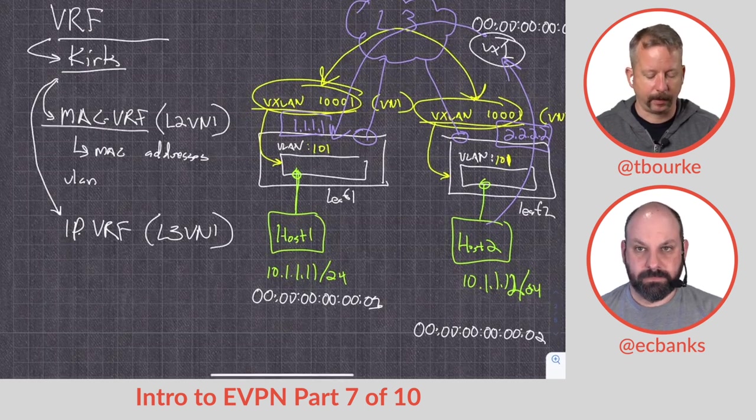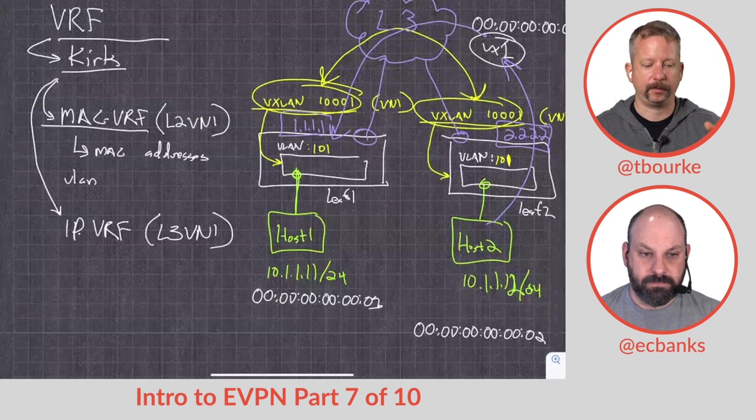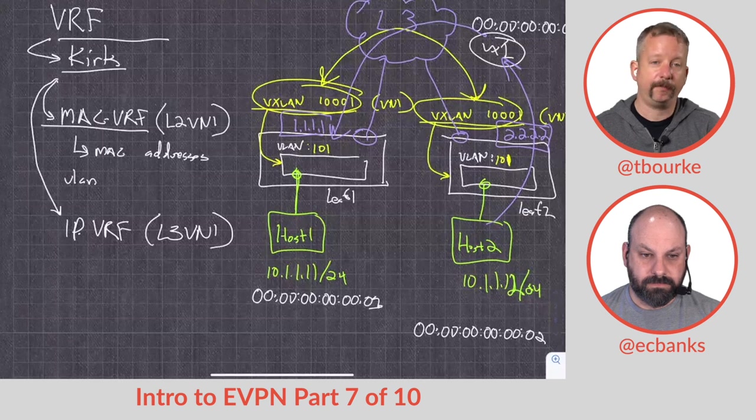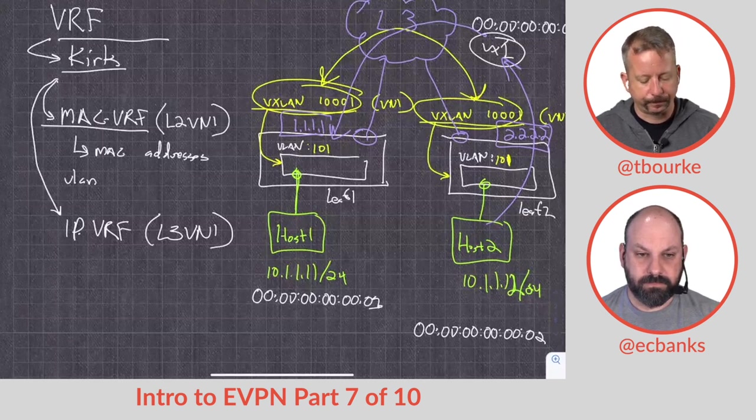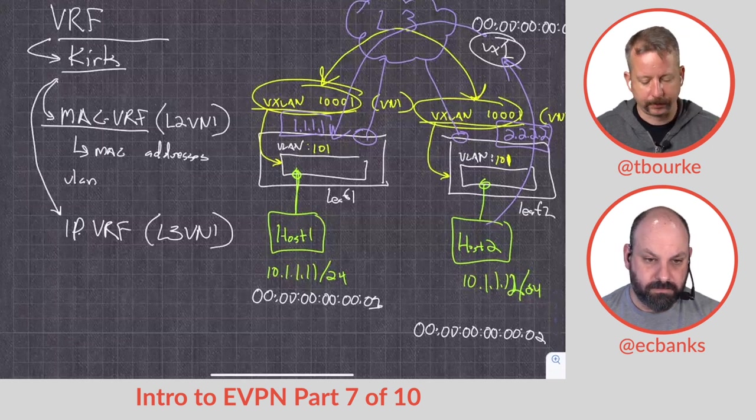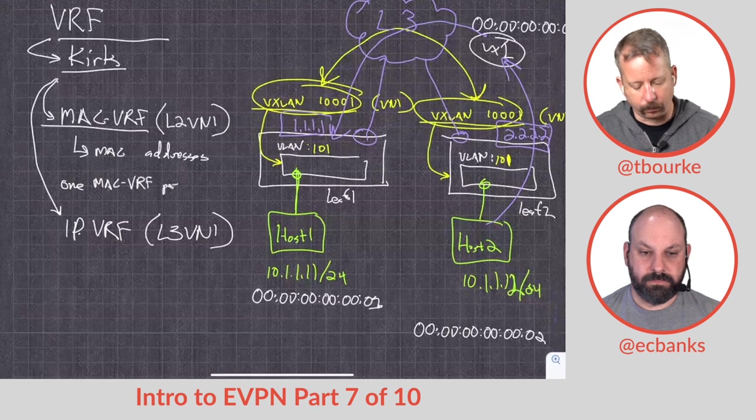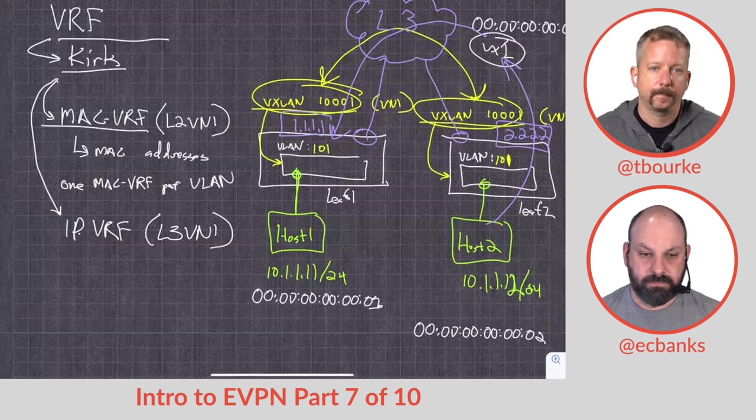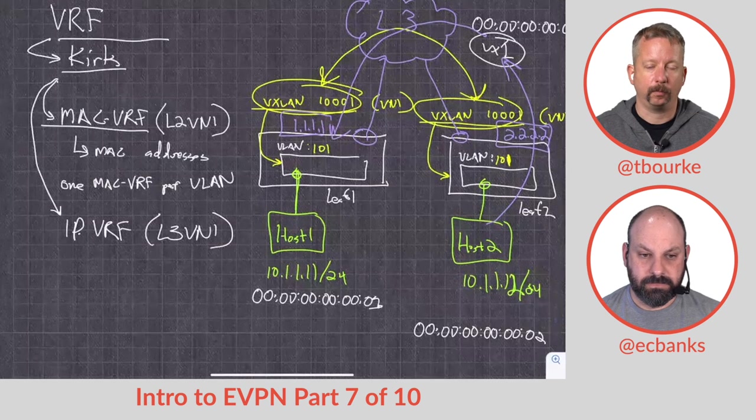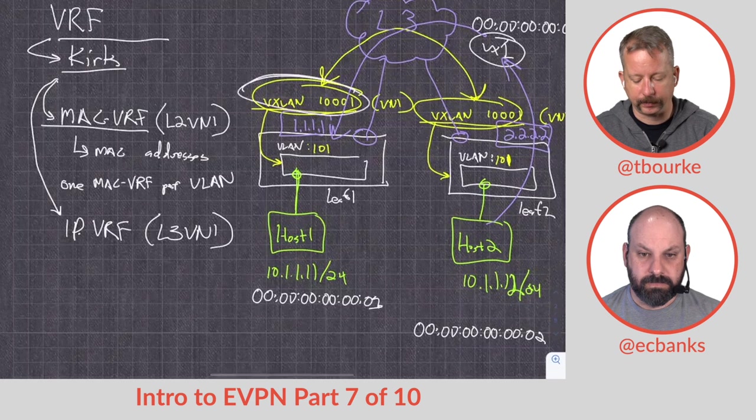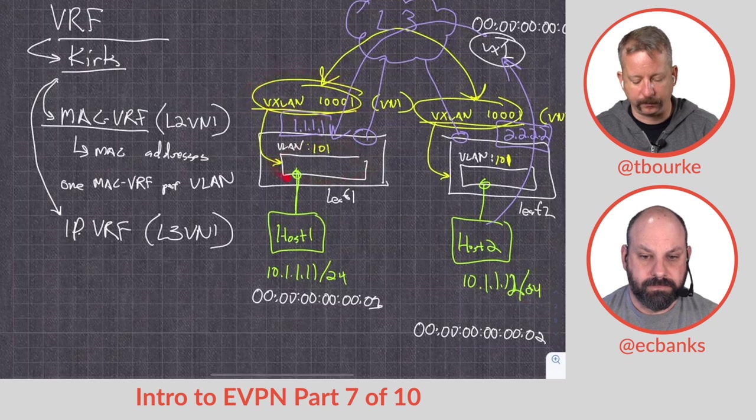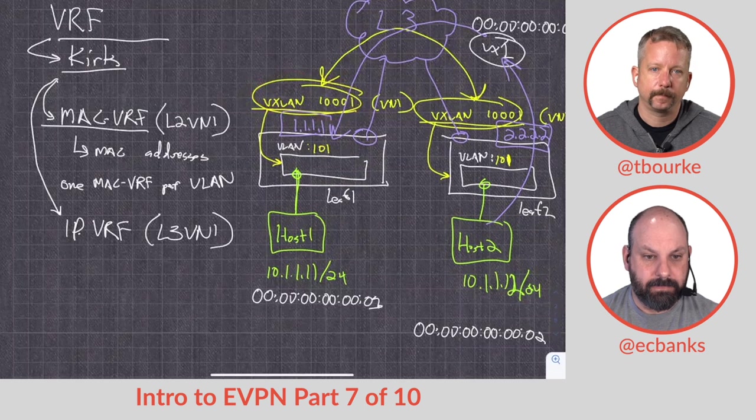So these MAC VRFs, these discrete forwarding spaces are going to be underneath the VRF Kirk, and these IP VRFs are going to be under there as well. Now, the MAC VRFs, we create usually one MAC VRF, so one layer two VNI, so one VXLAN segment per VLAN locally. So it's going to be one VLAN, one MAC VRF per VLAN. So one of these for every one of these VLANs. Makes sense, yeah.